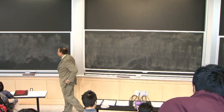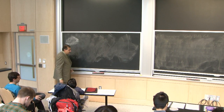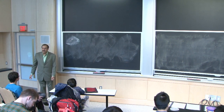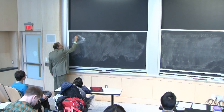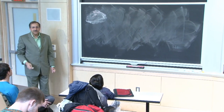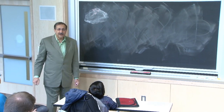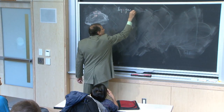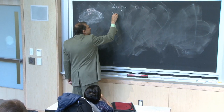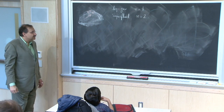Recapping what we have been doing: many systems that undergo phase transitions can be characterized through a statistical field. By analogy with magnetization of a magnet, we denote it by m, which varies as a function of position on the sample. It is a vector with n components, and we can distinguish different types of systems by the number of components n.